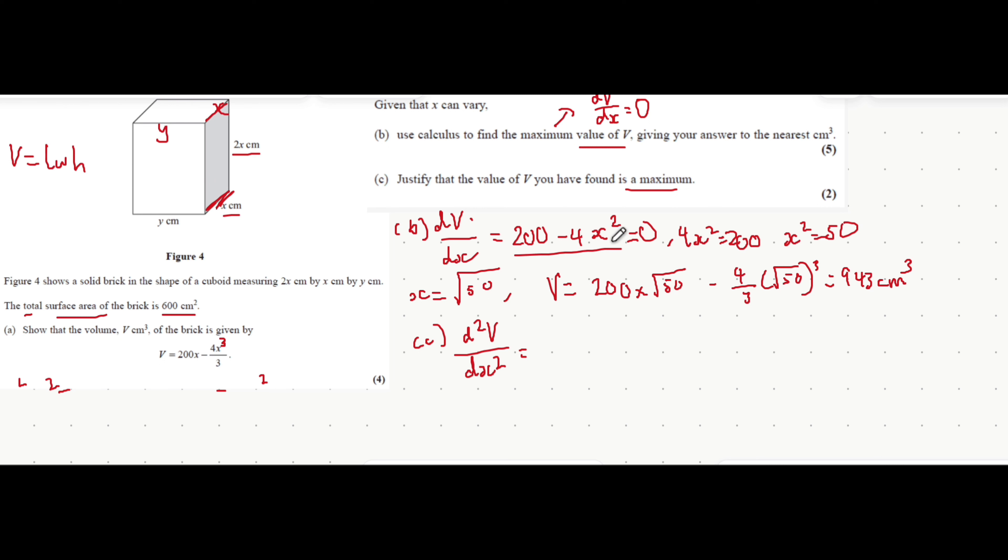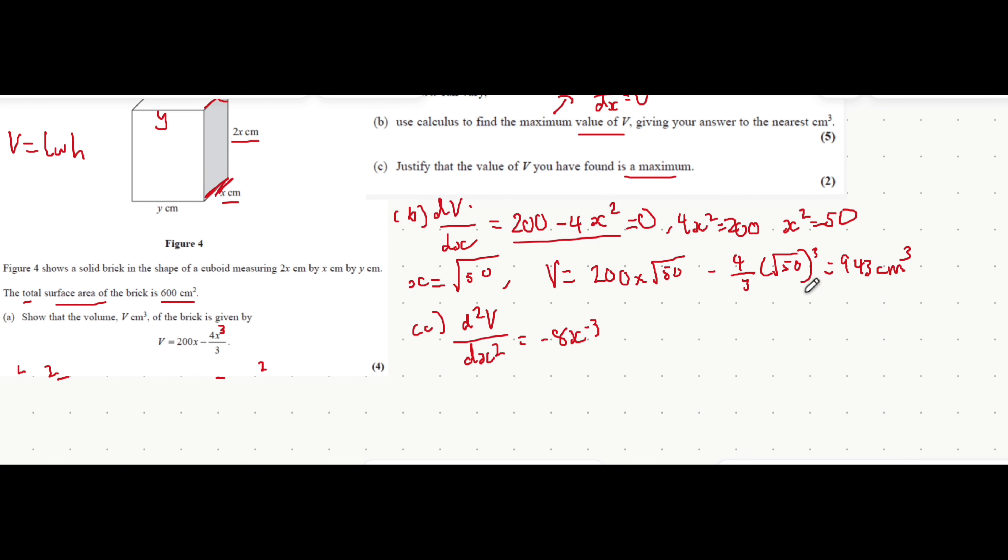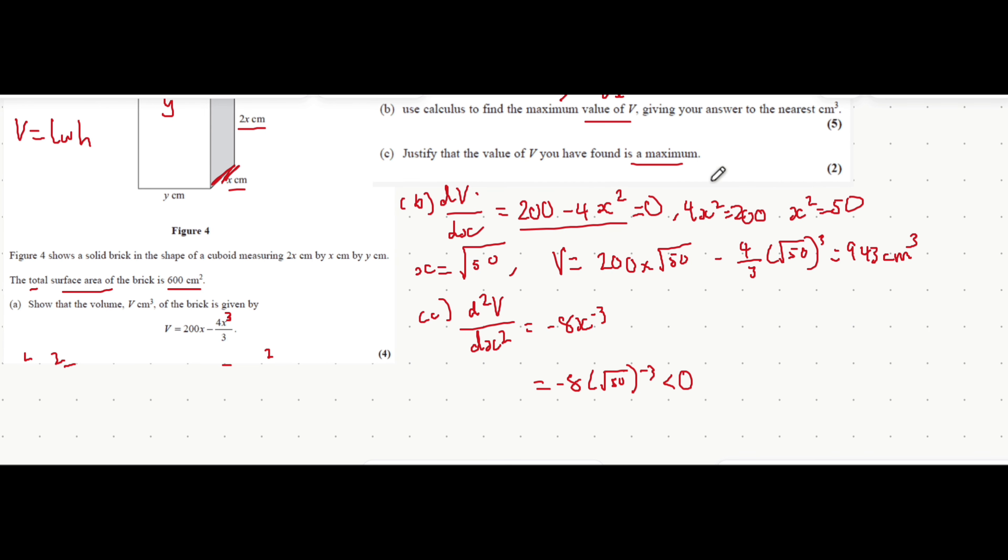Now 200 differentiates to 0. Minus 4x squared: minus 4 times 2 is minus 8x to the power of 1. When you put the value of x that creates that maximum value, which we found is root 50, into this expression, that's minus 8 multiplied by root 50, we get that it's negative. Since it's negative, that proves that it's a maximum.